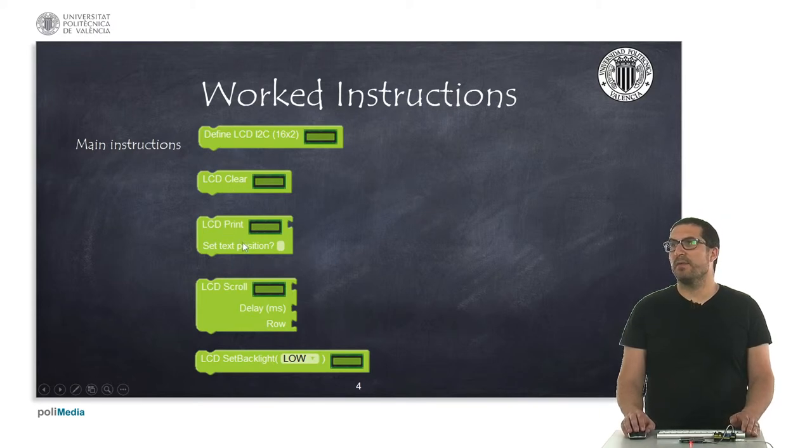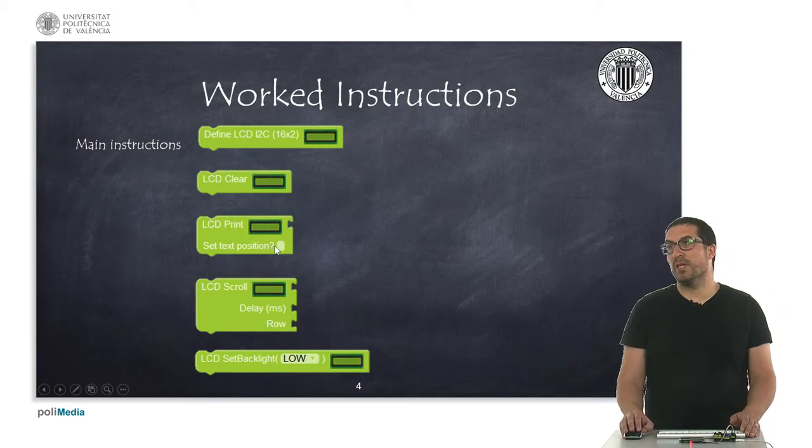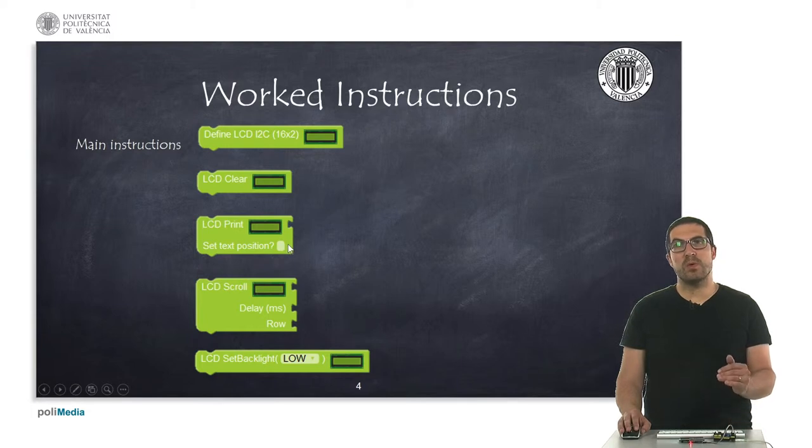Then we have this print instruction which is mutable. This instruction is used to print text, so we can put a text string here and we will see this text string on the screen. But we can check this box here and then we can specify in which row and which column we want to start this text.